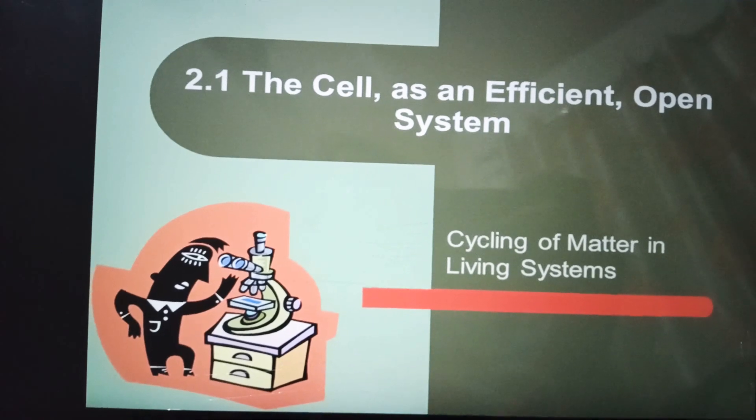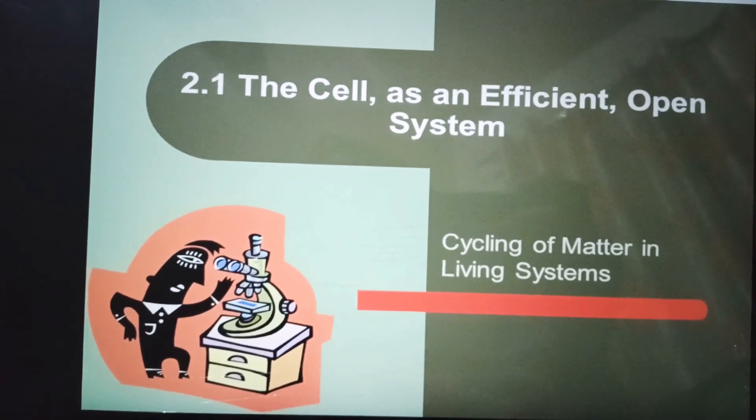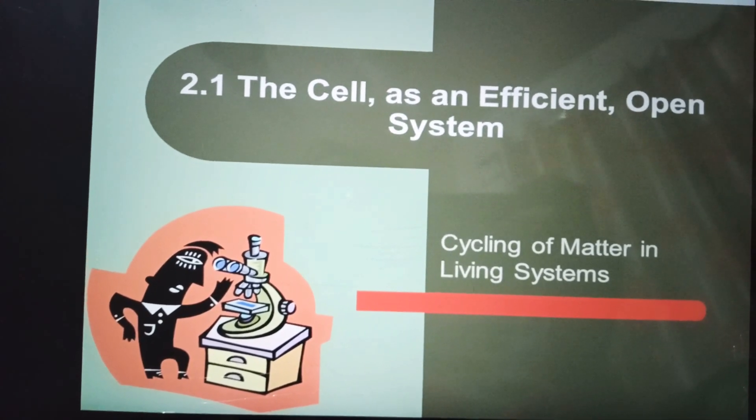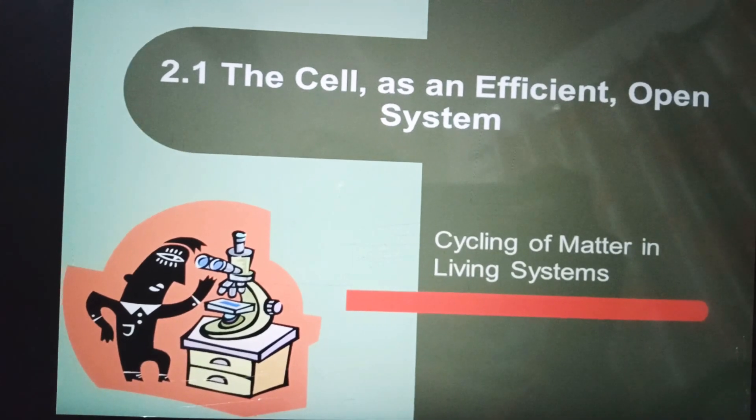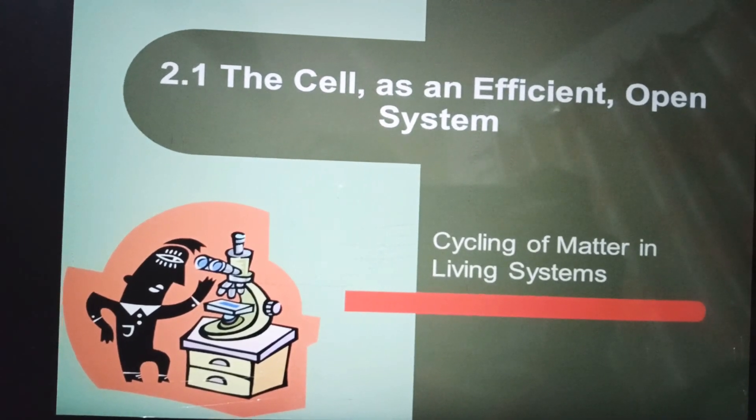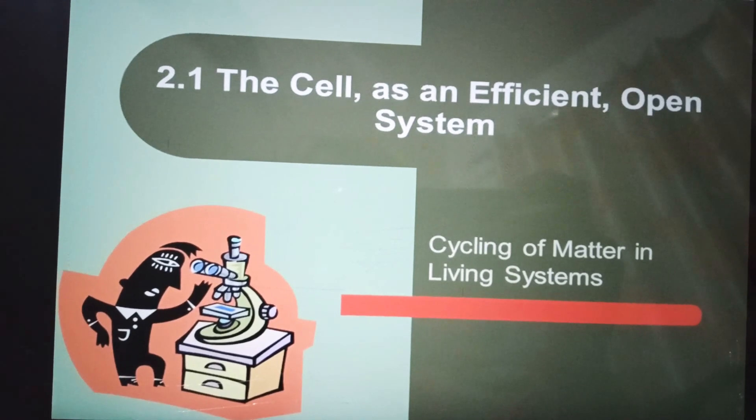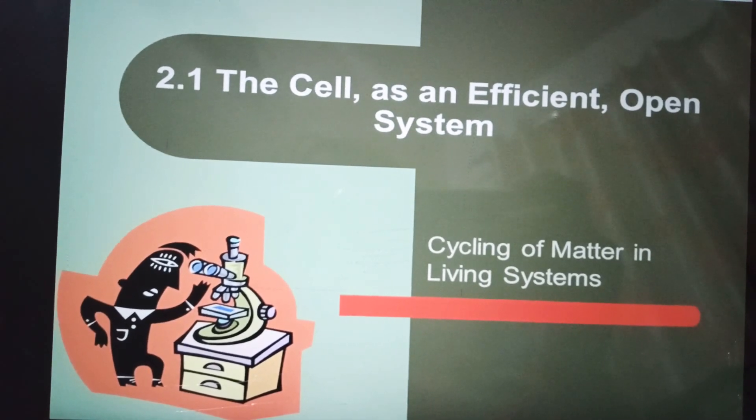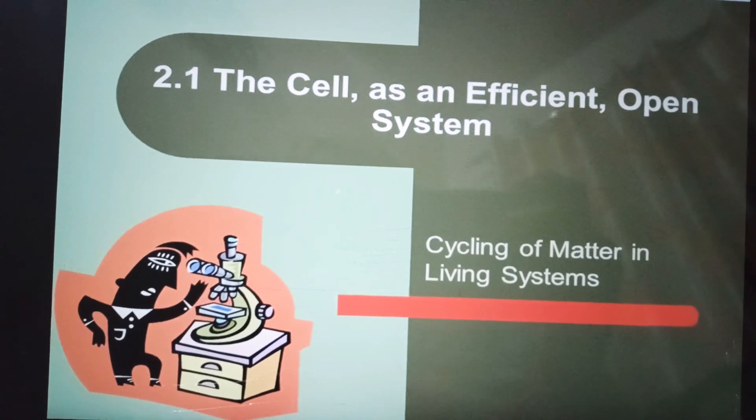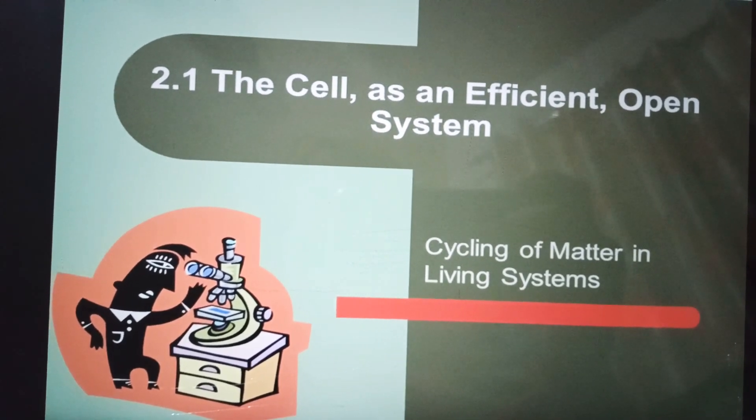Now I will describe cell as an open system. A cell works as an open system, which means it takes in substances needed for its metabolic activities through its cell membrane, then it performs the metabolic processes as assigned to it.